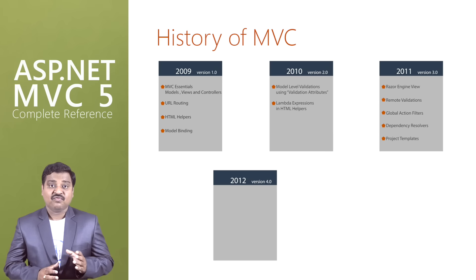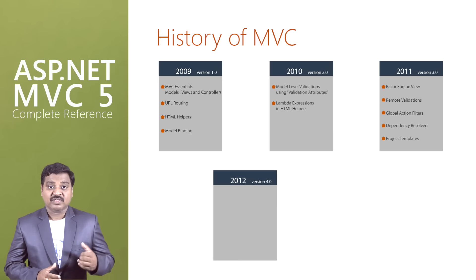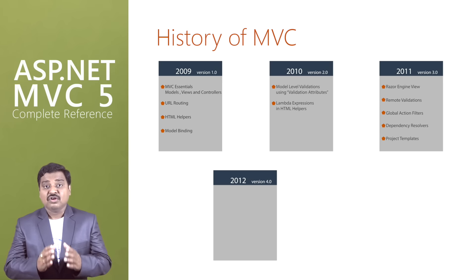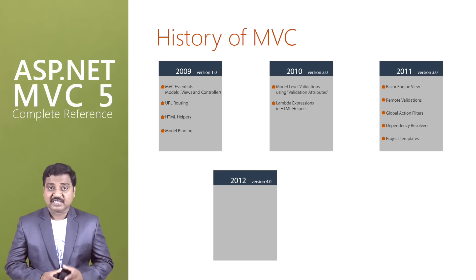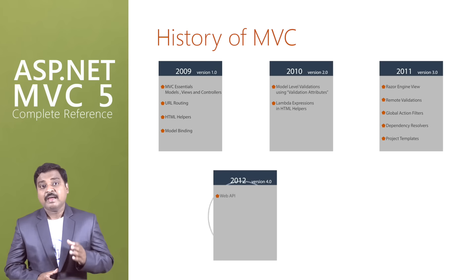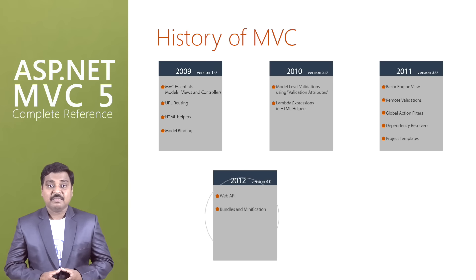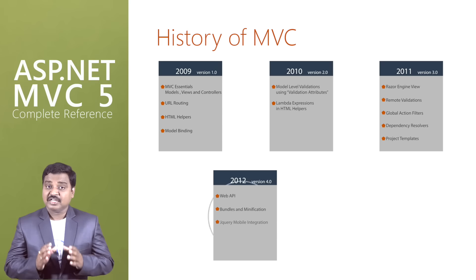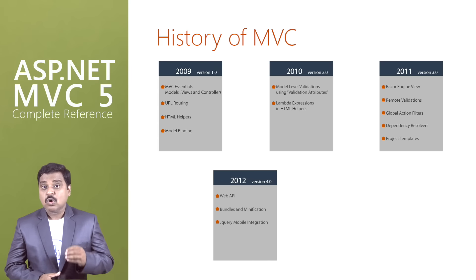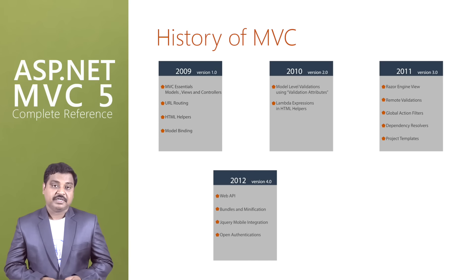In 2012, ASP.NET MVC 4.0 was introduced with further new features such as Web API, bundling and minification, jQuery mobile integration, and open authentication.